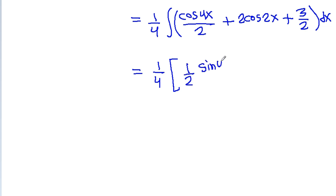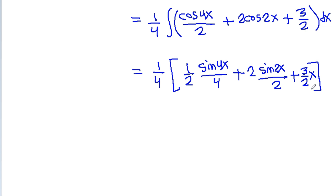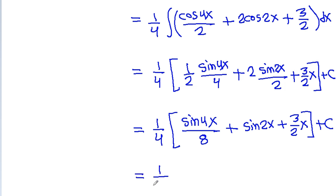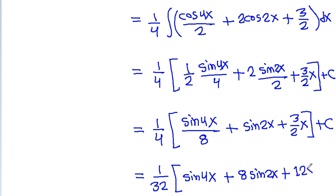Integrating term by term: the integral of cos4x is sin4x/4, the integral of cos2x is sin2x/2, and the integral of 3/2 is 3x/2, plus constant C. Multiplying through by 1/4 and then multiplying and dividing by 8 gives us the final result: (1/32)(sin4x + 8sin2x + 12x) + C.